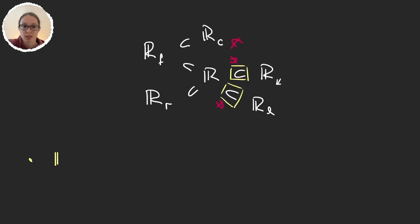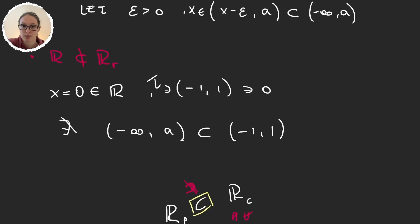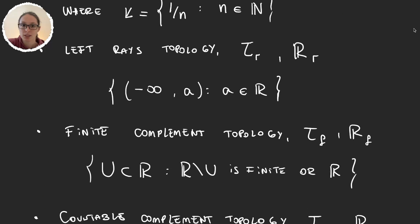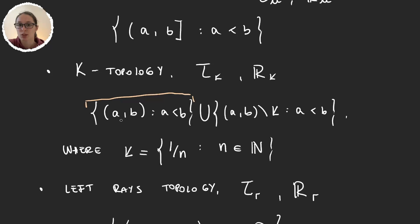The first one is going to be very simple: the standard topology is a subset of the RK topology. If we go back to the first video where we defined all these topologies, the RK topology is generated by the standard open sets and also the open sets minus K. So the standard topology is contained within those generating sets, making the inclusion trivial to see.